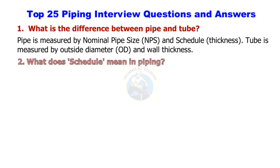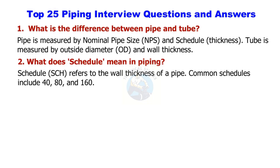What does schedule mean in piping? Schedule (SCH) refers to the wall thickness of a pipe. Common schedules include 40, 80, and 160.